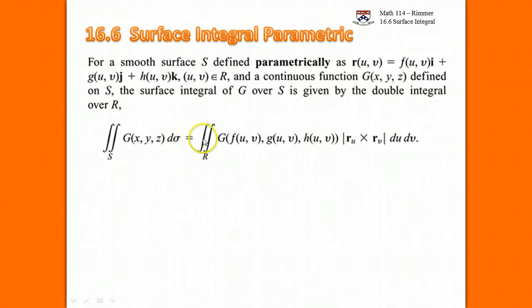It'll turn into us replacing the x, y, and z in the function with the parametrization f, g, and h. The dσ, the piece of surface area, is found by the cross product between the u partial and the v partial of this position function, of this parametrization.